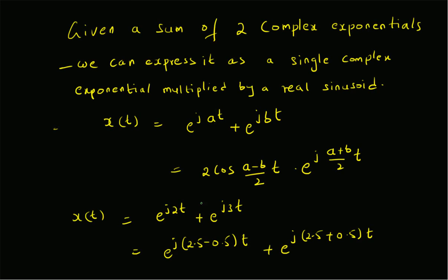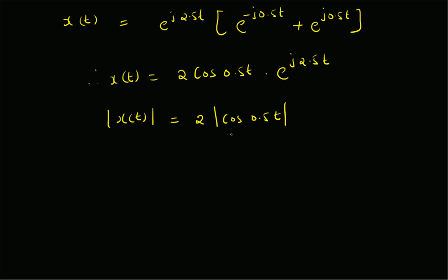So if you plot the absolute value of the sum of these two complex exponentials, what we get is basically the absolute value of a sinusoid, and the frequency will be equal to half of the difference between the exponents of e^(j·a·t) and e^(j·b·t).